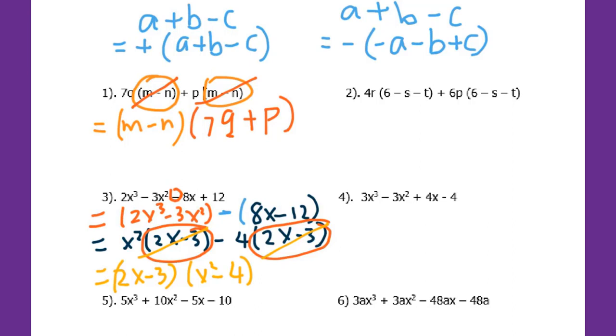But check, can you keep factoring? Is this difference of squares factoring? Yes it is. So I will do the square root for both. My final answer will be 2x minus 3, x plus 2, x minus 2.